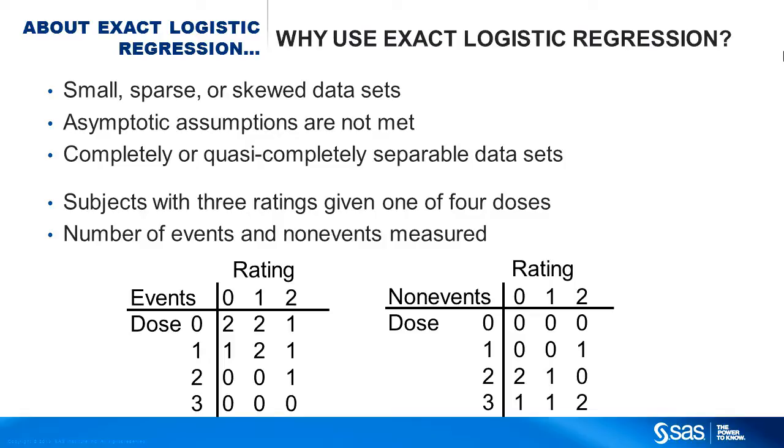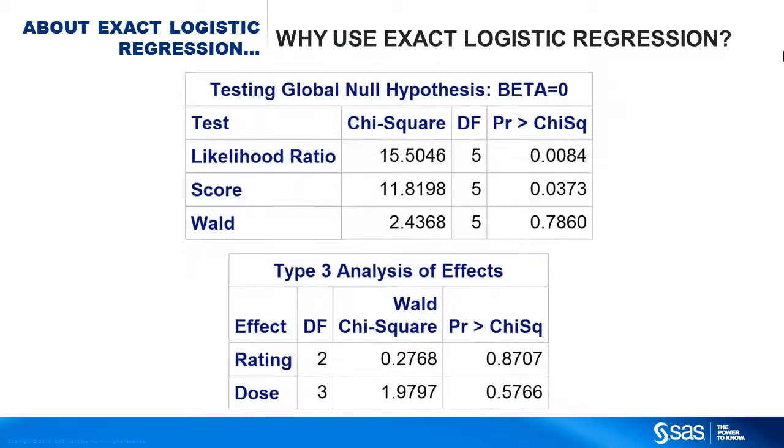If you run a standard, unconditional logistic regression on this anyway, you can see the likelihood ratio and score tests indicate that some of the model parameters are significant. But the Wald test disagrees and says no parameters are significant. In the second table, you find that the rating and dose effects are not significant.